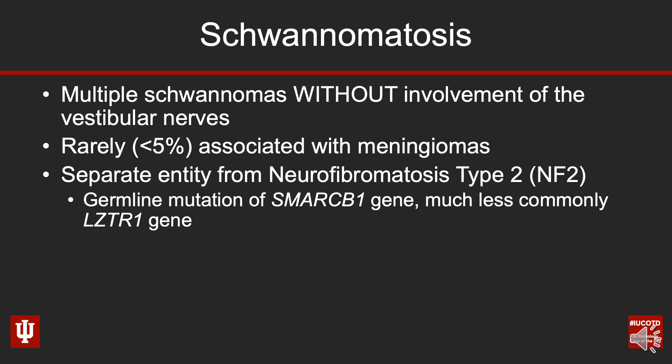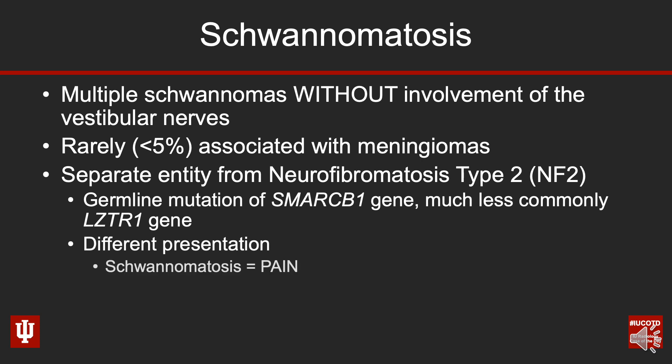Schwannomatosis is caused by a germline mutation in the SMARCB1 gene, and much less commonly in the LZTR1 gene. Interestingly, SMARCB1 is the same gene implicated in some aggressive sinonasal tumors in the head and neck as well as some genitourinary tumors, often in pediatric patients — but different mutations result in different problems. The problem here is that patients have multiple schwannomas, and this has a different clinical presentation than NF2.